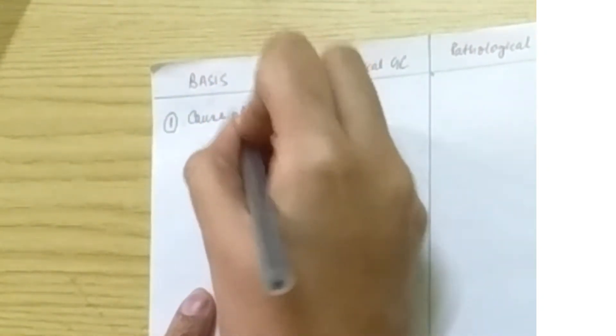The first point of difference is their causes. Why are they formed? So physiological giant cells are the normal cells in the body,